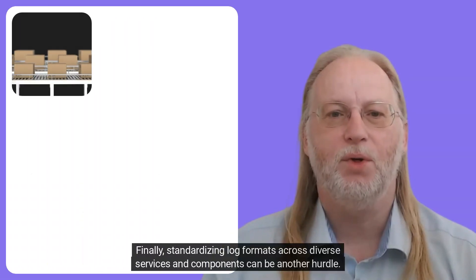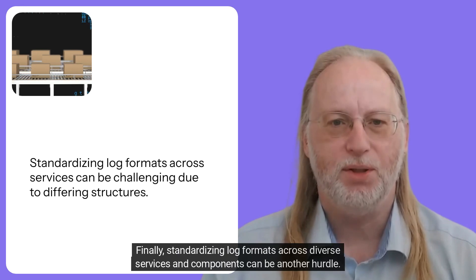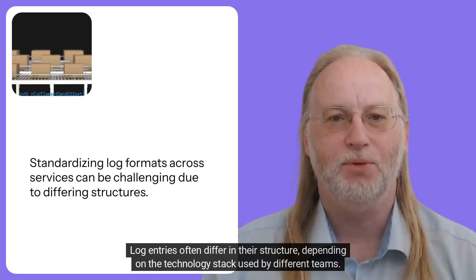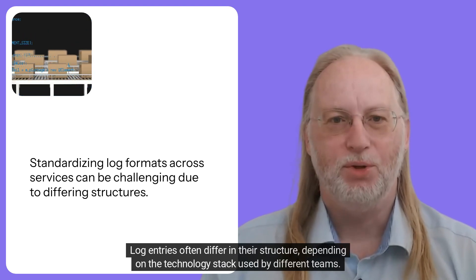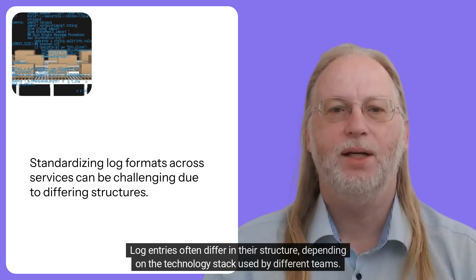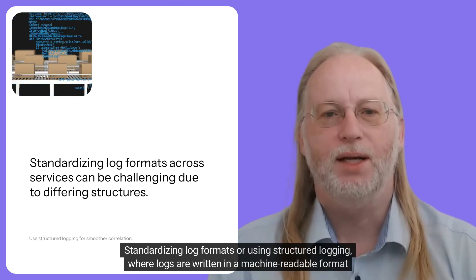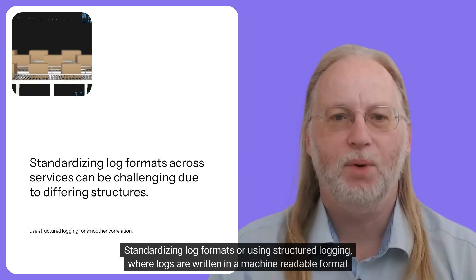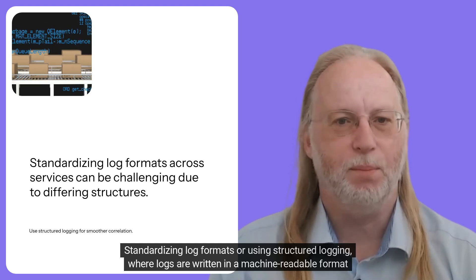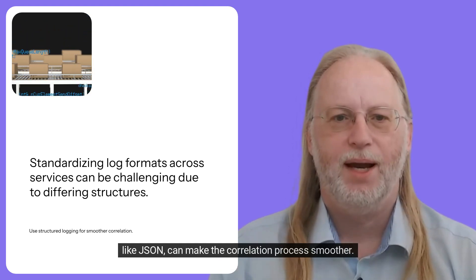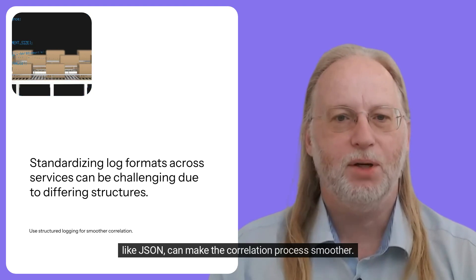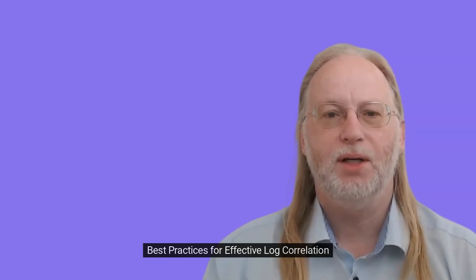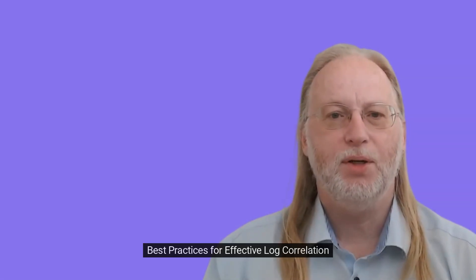Finally, standardizing log formats across diverse services and components can be another hurdle. Log entries often differ in their structure depending on the technology stack used by different teams. Standardizing log formats, or using structured logging where logs are written in a machine-readable format like JSON, can make the correlation process smoother.